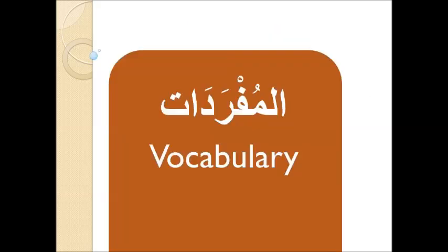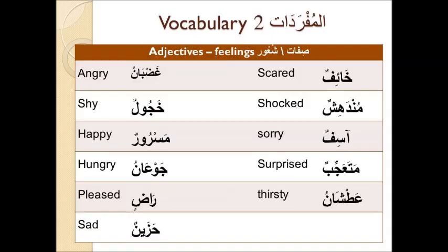Vocabulary. Vocabulary 1: Al-alam — Names. What indicates on a specific entity. Note: names of people and places are not translated; they are only transliterated by writing them in English letters. For example, Khalid is written as Khalid. Vocabulary 2: Al-mufradat. In this table there is a list of feelings — shu'ur.